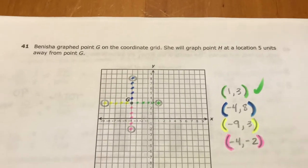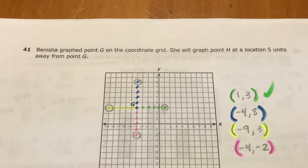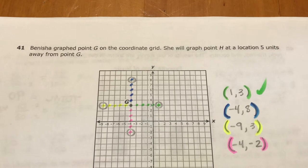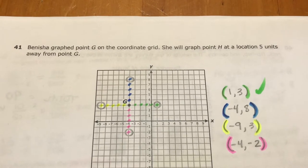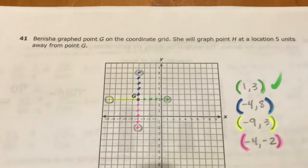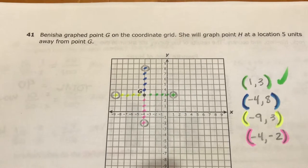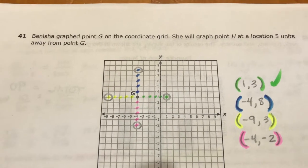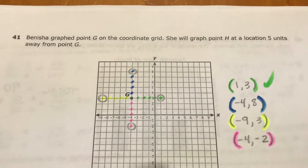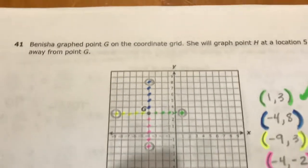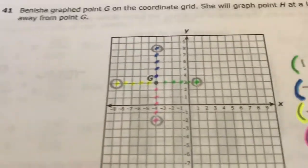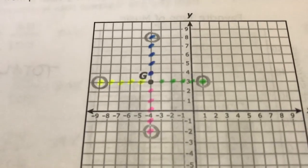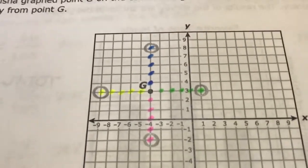This one is dealing with the coordinate plane and it says that she graphed point G on the coordinate grid, which you see right there, that's the black one. And it says she will graph point H at a location five units away from it.